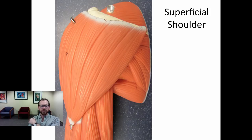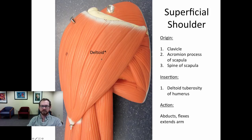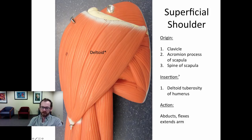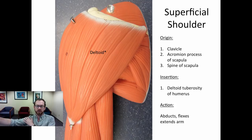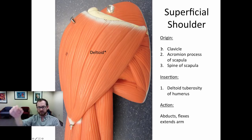Looking at the superficial shoulder, the first muscle is the deltoid, which requires origin and insertion. Origins are the clavicle, the acromion process of the scapula (lateral side), and the spine of the scapula (posterior) — pick one. Following it down about halfway along the humerus, the insertion is the deltoid tuberosity of the humerus. When this muscle contracts, it abducts the arm — pulling it away from the midline. Because of its multiple origin points, it also flexes and extends the arm.